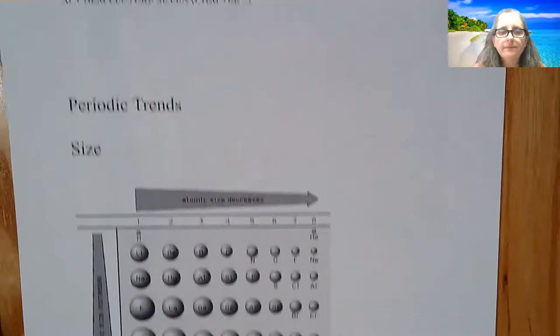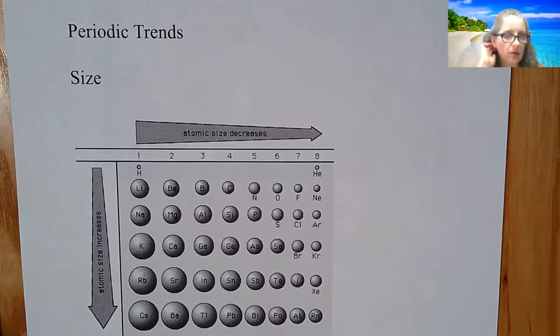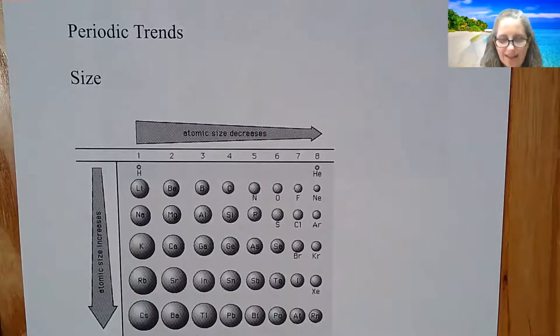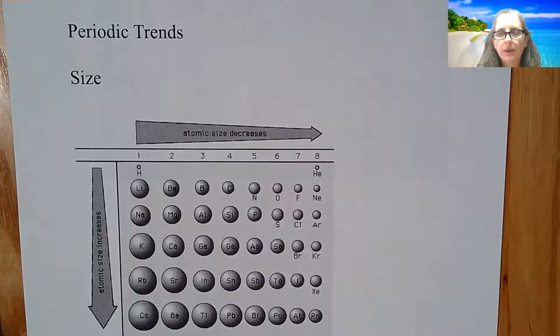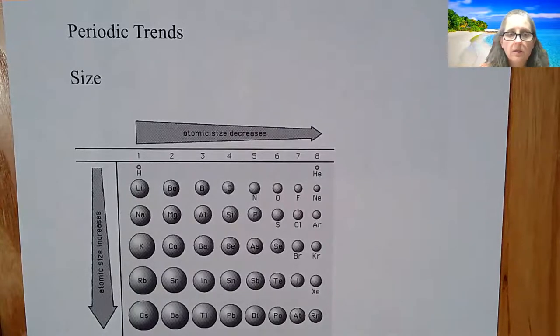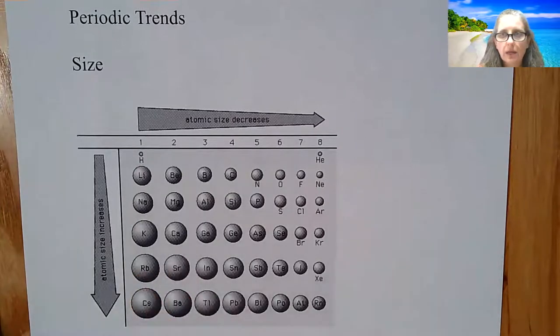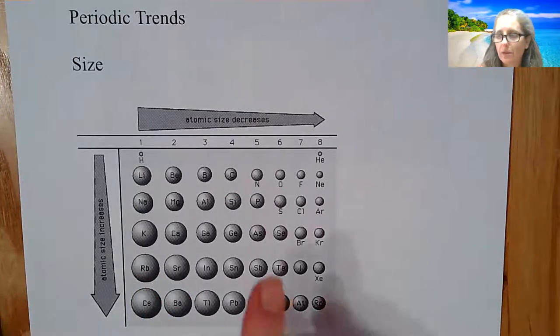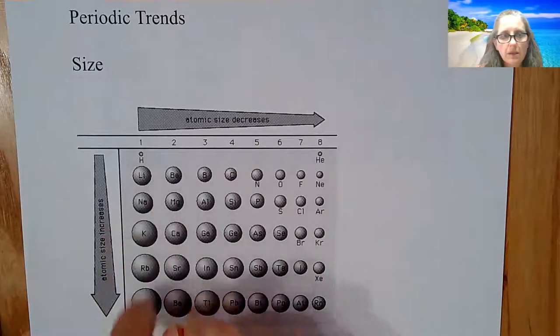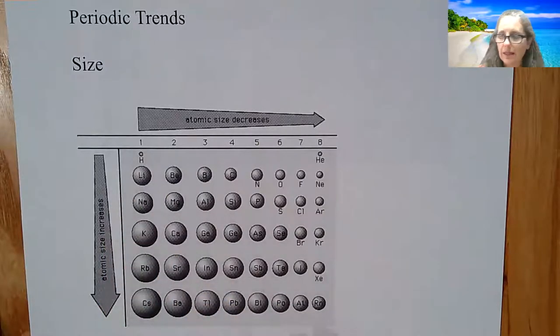So this is lecture seven, looking at periodic trends and some of the presentations you guys have done have gone very well. But I'm just going to add a little bit to each topic or each trend that I want you to focus on. So like this picture, and again you have access to all of my notes, as you go from left to right, the size decreases. As you go down, the size increases. Not only are you going to have to know what the trend is, but you're going to have to know why.